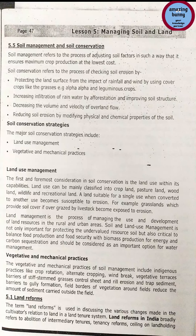Soil management refers to adjusting soil factors to ensure maximum crop production at the lowest cost. Soil conservation refers to checking soil erosion by protecting the land surface from the impact of rainfall and wind — using cover crops like grasses (e.g., alfalfa) and leguminous crops, increasing infiltration by afforestation, improving soil structure, decreasing the volume and velocity of overland flow, and reducing soil erosion by modifying the physical and chemical properties of the soil.